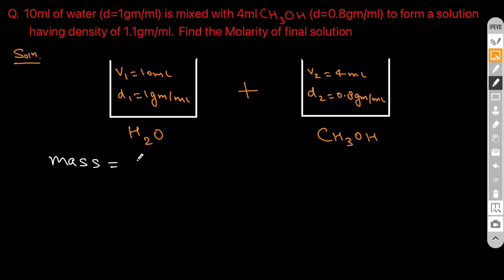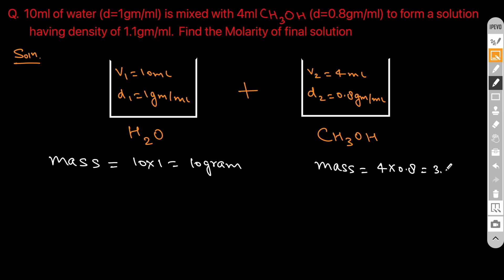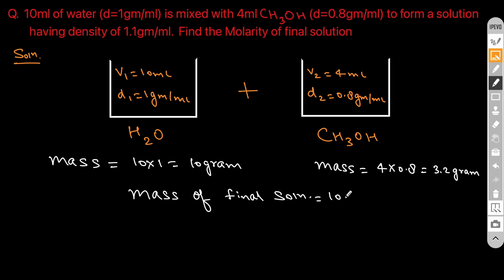Using this data: mass of water equals 10 times 1 which is 10 grams. Mass of CS3OH equals volume times density, so 4 multiplied by 0.8, which comes out to 3.2 grams. The mass of the final solution is the sum of mass of water plus CS3OH: 10 plus 3.2 grams, which equals 13.2 grams.